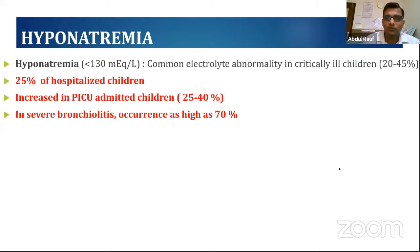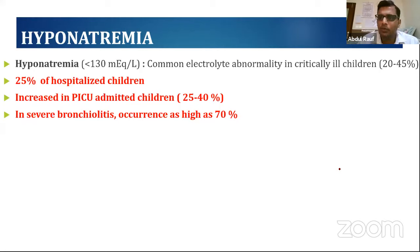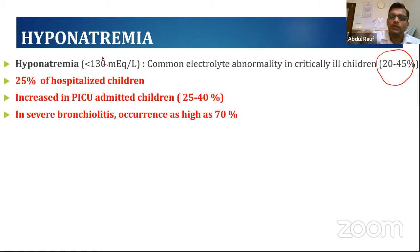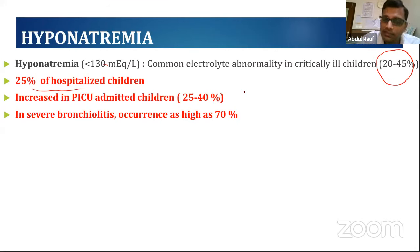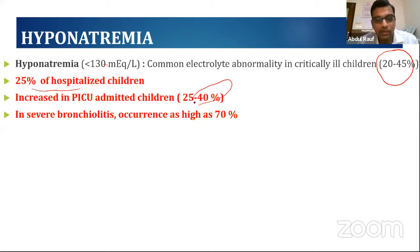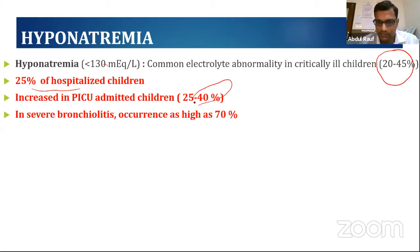Hyponatremia by definition is sodium less than 135. It is a common electrolyte abnormality in critically ill children, with a prevalence of 20–45%. Hospital-based studies show 25% of hospitalized children can have hyponatremia. In pediatric ICU, prevalence increases to 40%. Studies in children with bronchiolitis and pneumonia have shown hyponatremia occurrence as high as 70%.